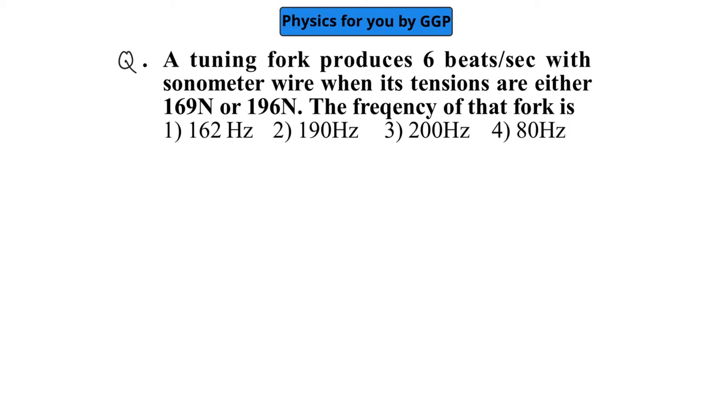It is given that the tuning fork produces 6 beats per second with sonometer wire when its tensions are either 169N or 196N. The frequency of that tuning fork is what we need to find.